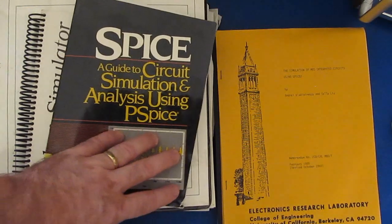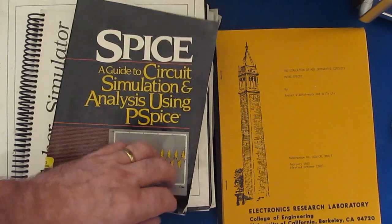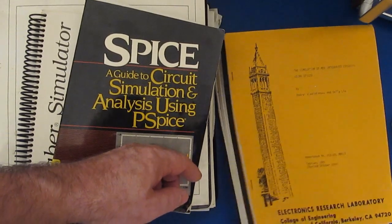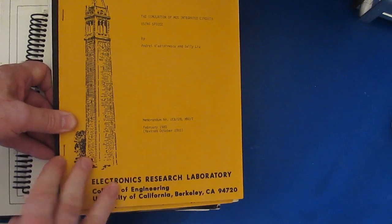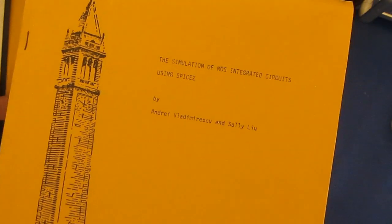The very first company that I worked for, we had a version of SPICE. It ran on a Vax 11780. These are the original manuals from Berkeley. You can see this one dates from February of 1980. Simulation of MOS integrated circuits using SPICE 2.